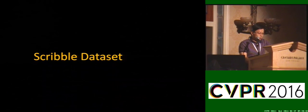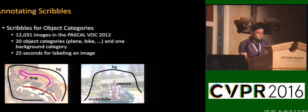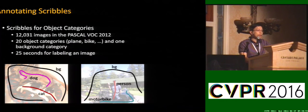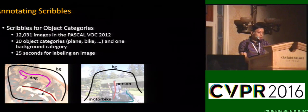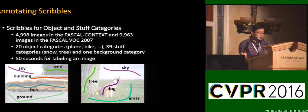To evaluate our method, we collect scribble annotation data on the Pascal dataset following two protocols. In the first protocol, we annotate the Pascal VOC 2012 dataset; it takes the annotator on average 25 seconds to label an image with 20 object categories. In the second protocol, we annotate the Pascal Context and VOC 2007 dataset; it takes about 50 seconds to label an image with 59 object and stuff categories.